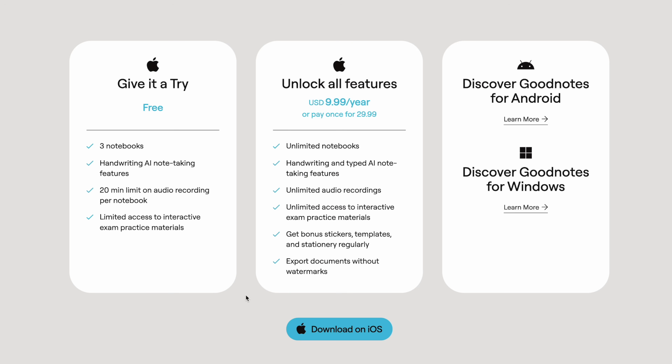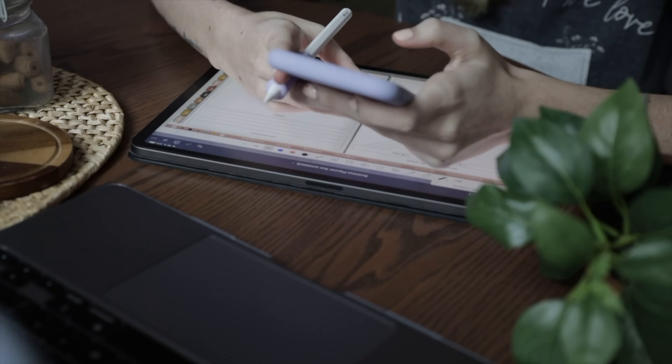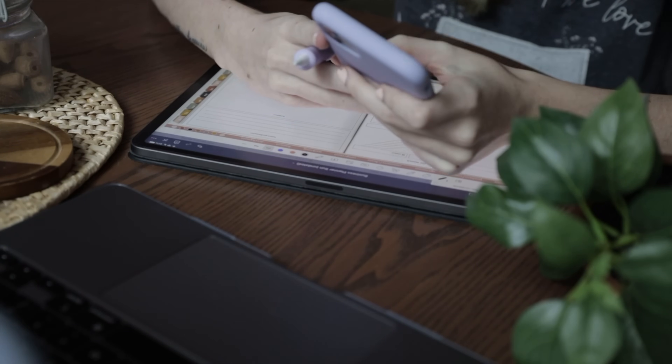You can subscribe to GoodNotes 6 for $9.99 US dollars a year, or you can pay a one-time cost of $29.99, which is over a $20 price jump from the previous one-time cost for GoodNotes 5. There is also a limitation of purchasing the one-time tier — if you opt to pay yearly, you'll be able to sync across platforms iOS, Android, and Windows, whereas if you pay the one-time cost, you'll only be able to sync between iOS devices.